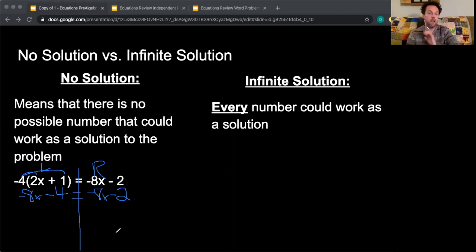So instead, I'm going to now try and solve. I'm going to try to get this -4 over to the other side. So I'm going to add 4, add a positive 4 to both sides of the equation. These will cancel out, leaving me with -8x equals -8x + 2.